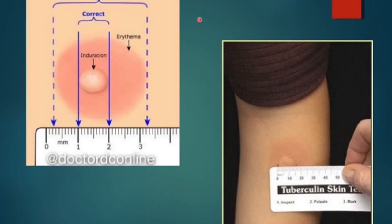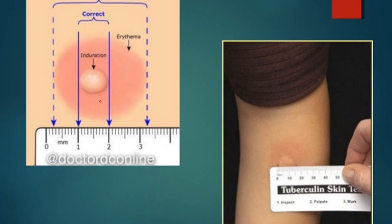The Mantoux test is based on the cellular immune response of the host. Five tuberculin units of PPD (purified protein derivative) are injected into the forearm, and the patient is called back after 48 to 72 hours. The induration is measured: 10 mm or more is positive, 5 to 9 mm is equivocal, and less than 5 mm is negative.